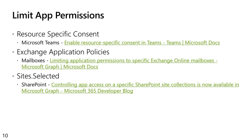For the Teams APIs, they have a specific resource-specific consent capability where you can limit the access of the application permission to specific teams. Exchange has their exchange application policies that lets you limit an application permission to specific mailboxes. And finally, SharePoint has sites.selected, which when issued by default the application has access to no sites, but admins could use something like Microsoft Graph in order to assign the application access to specific sites, and even within that, specific operations within those sites.